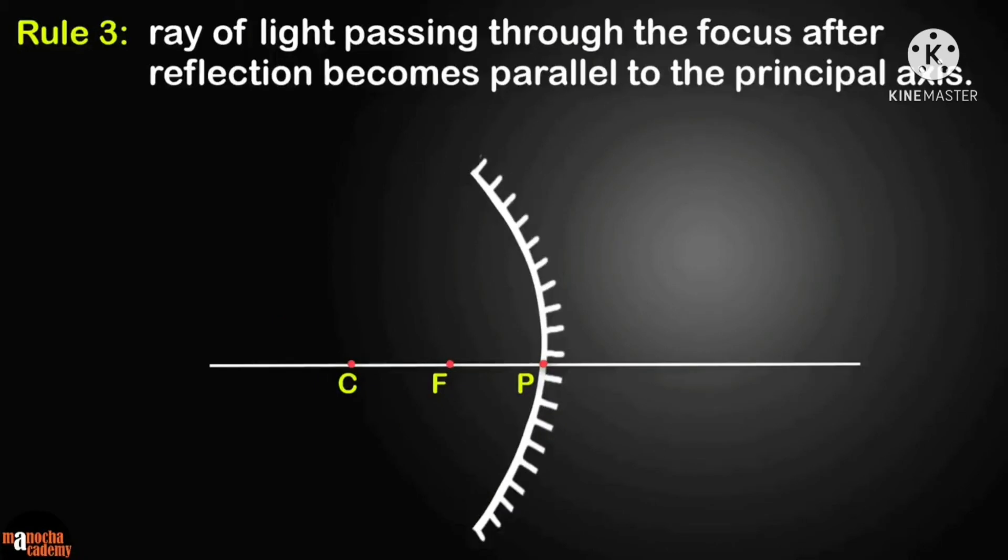Rule 3: a ray of light passing through the focus, after reflection, becomes parallel to the principal axis. Rule 3 is exactly opposite to rule 1. It's due to the reversibility of light.